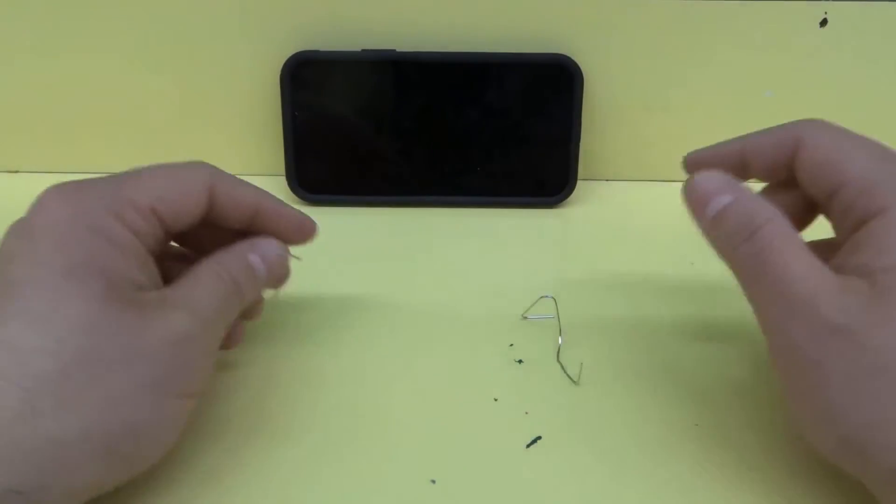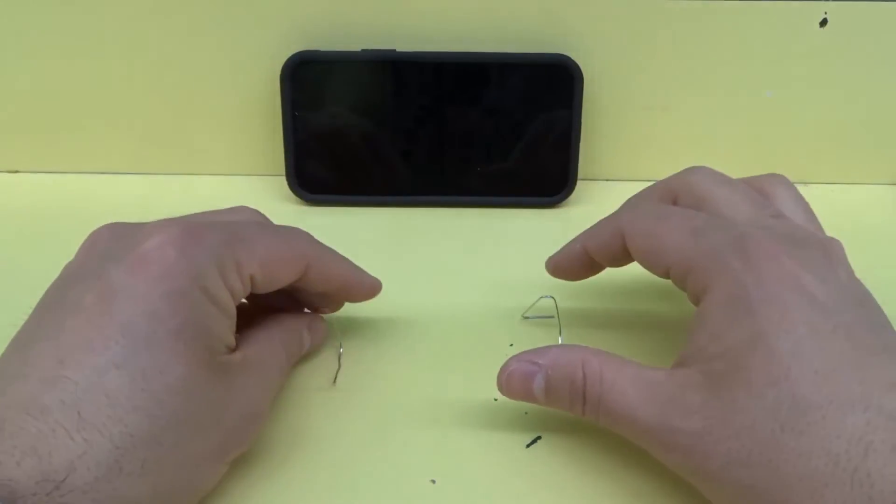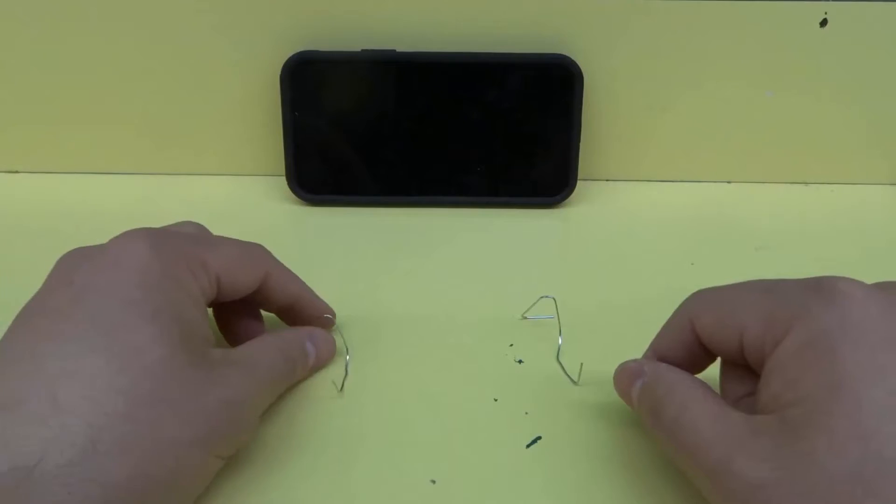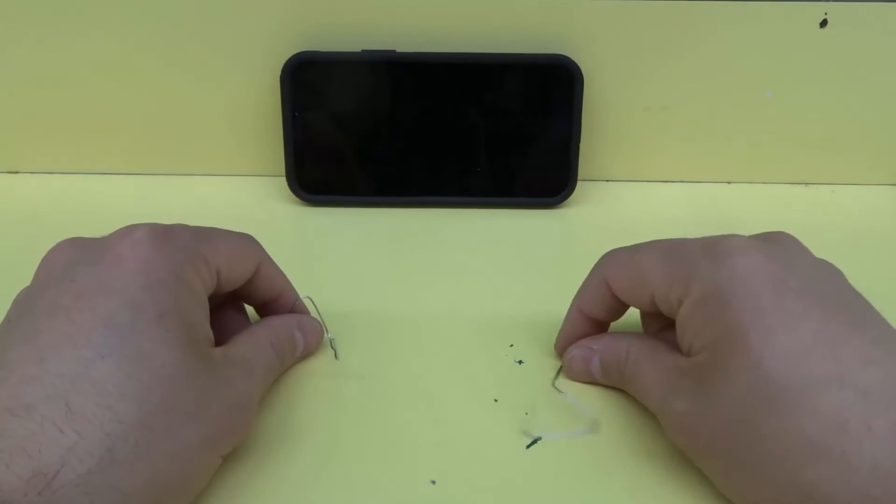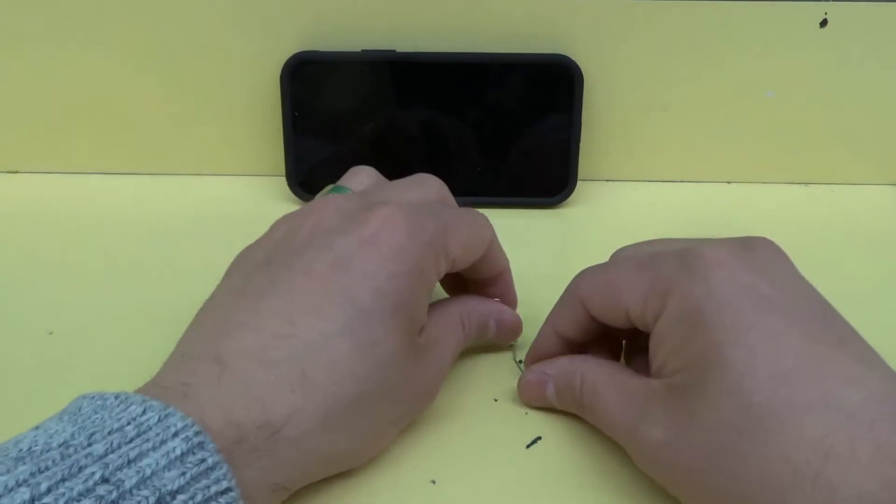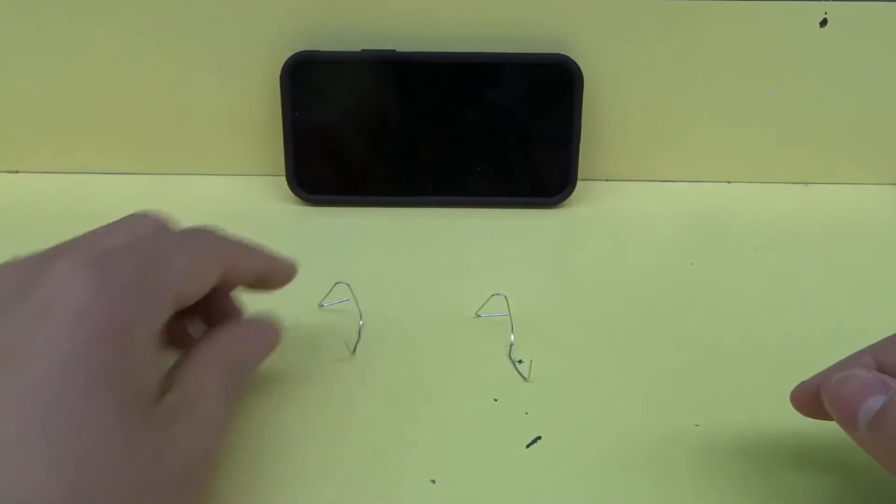You can make them whatever angle you want, and they'll work for any size cell phone because you just have to bend them to the right size. As you can see, this one I bent is a little better than the other one, but it's very simple. I'll show you exactly how to bend them.